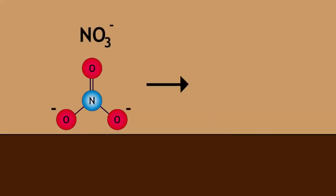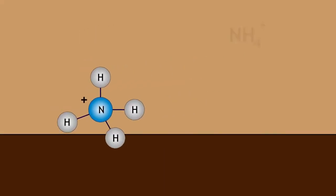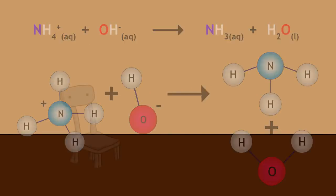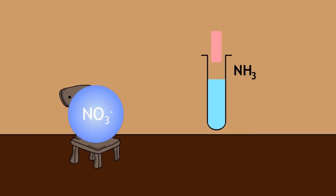Nitrates can be reduced to ammonium ions, which can then react with hydroxide ions to produce ammonia. Ammonia turns damp red litmus paper blue and forms a white smoke of ammonium chloride in the presence of concentrated hydrochloric acid.